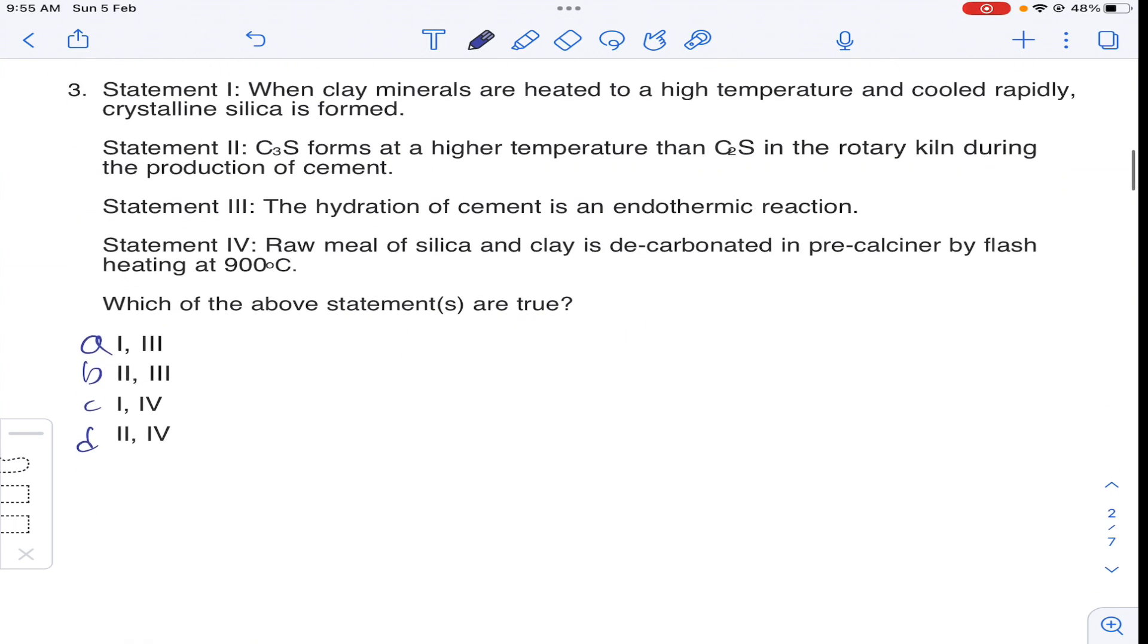Coming to question number 3, he has given 4 statements. Coming to first statement, when clay minerals are heated to a high temperature and cooled rapidly, crystalline silica is formed. When clay is heated at higher temperature and cooled rapidly, silica is not formed. Silica is formed when slow cooling. So this is a wrong statement.